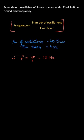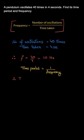Now, what is the formula for time period? Time period is the reciprocal of frequency — its formula is 1 upon frequency. We denote time period with capital T, so T equals 1 upon 10, which is 0.1 seconds.